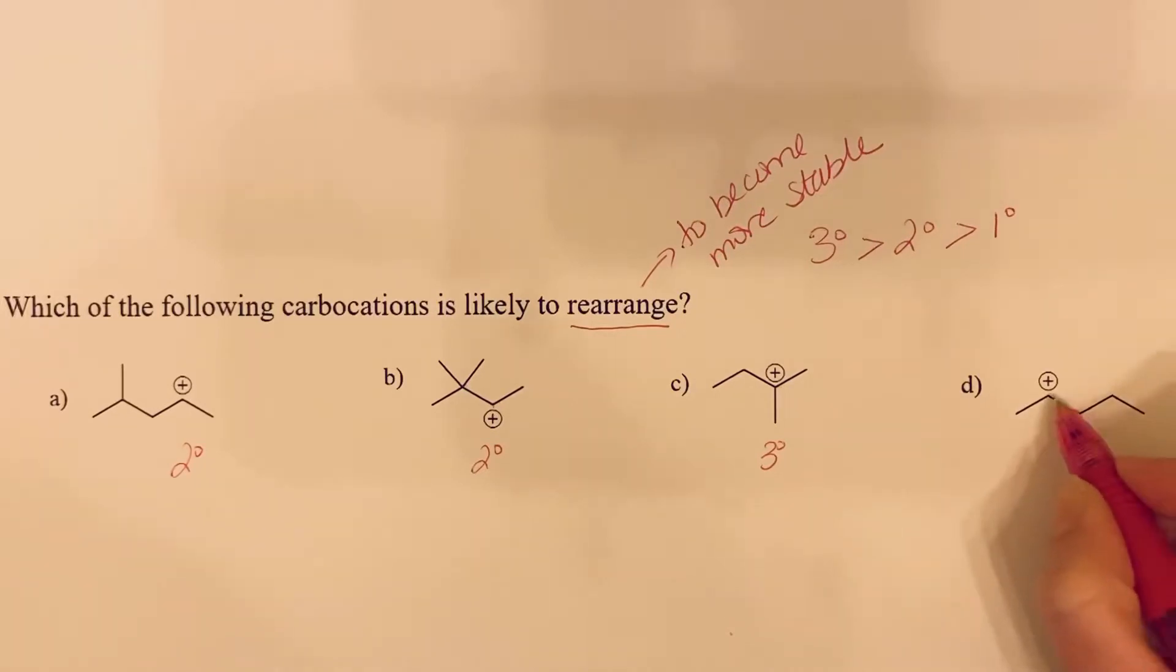And finally in D, we have a carbocation that has bonds to one, two other carbons, so this is also a secondary carbocation.